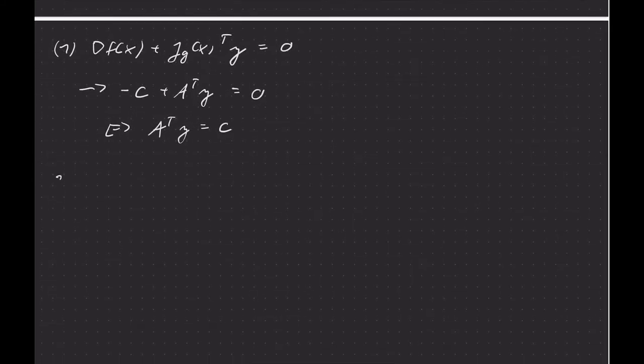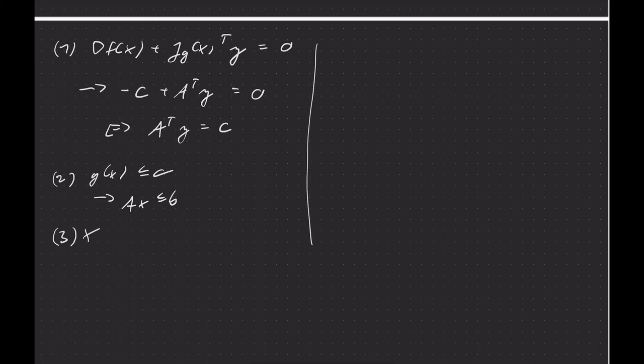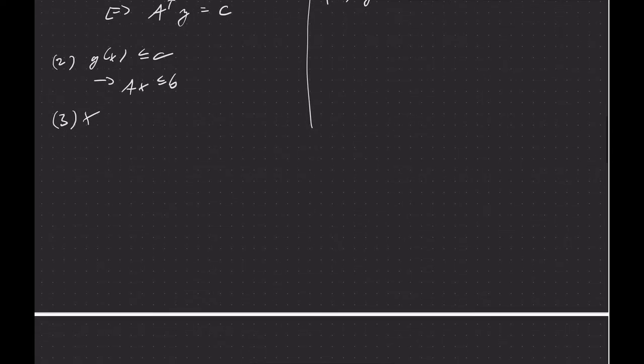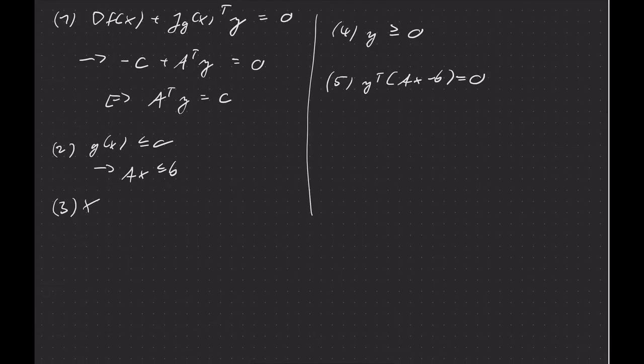Then we have feasibility clearly. So condition two is g(x) ≤ 0. So what that means here is Ax ≤ b. Condition three is not applicable. That is feasibility for the equality constraints. There are no equality constraints here. Condition four simply says the multipliers are non-negative. And then condition five, complementarity conditions. And that says yᵀ(Ax - b) = 0.